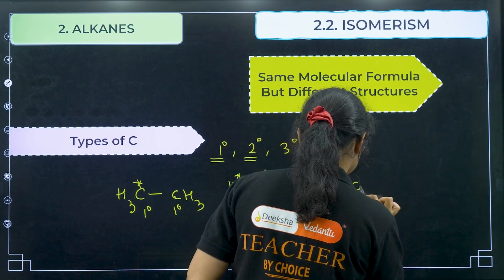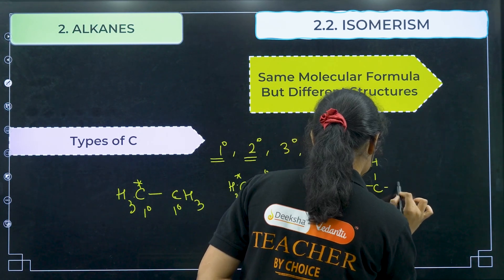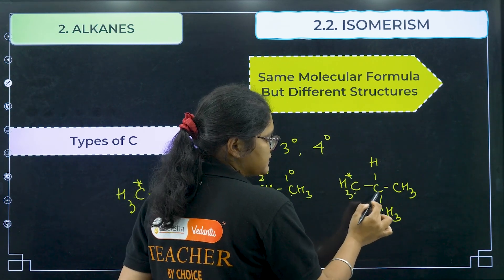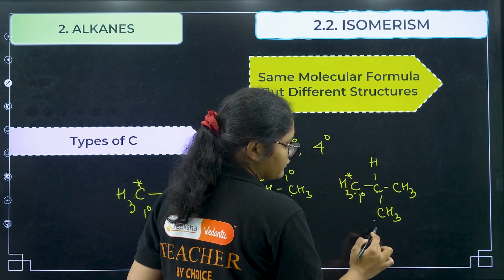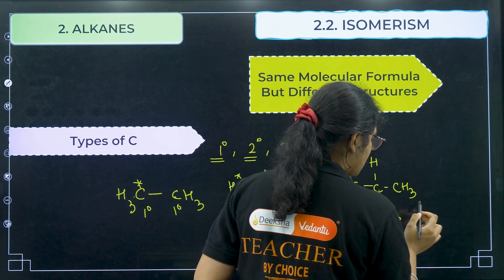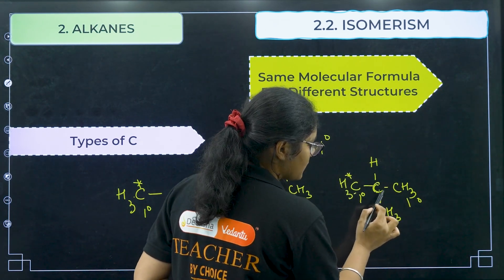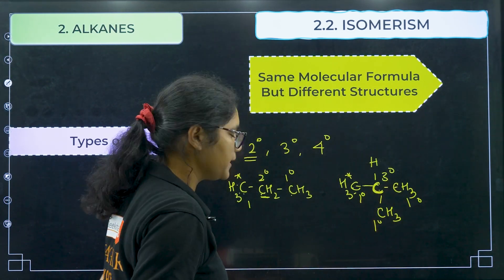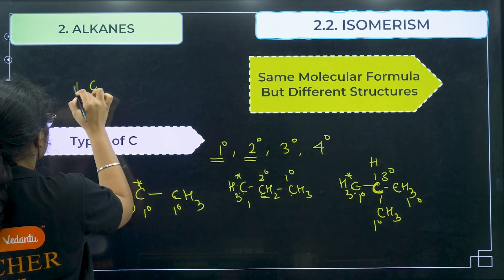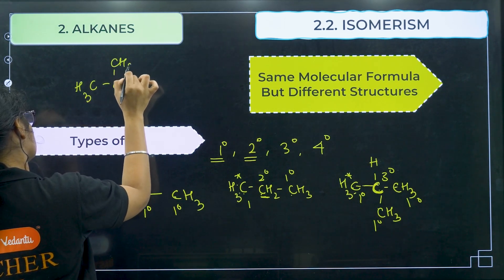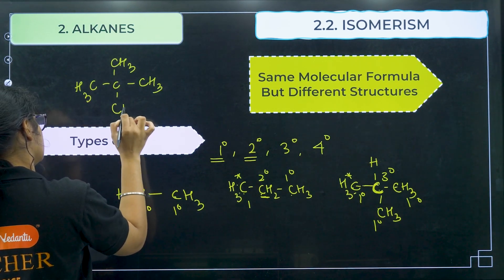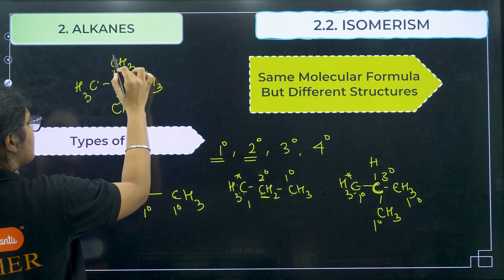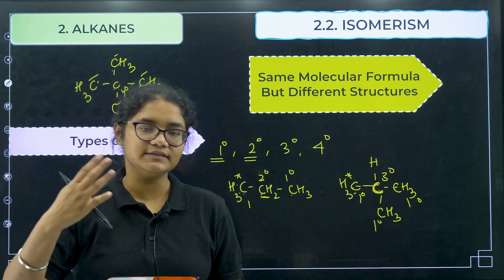Looking at another structure: the end carbons are each attached to only one carbon, so they are all primary. But the central carbon is attached to 3 other carbons, so that means it is a tertiary carbon. And in one more example, the central carbon is attached to 4 different carbons, so it is quaternary, and all other carbons attached to only one carbon are primary. That is all about types of carbon.